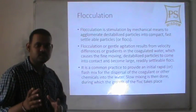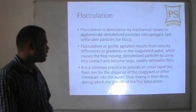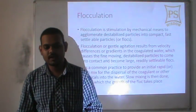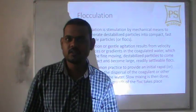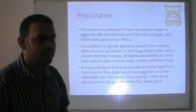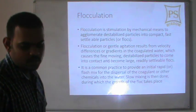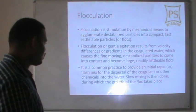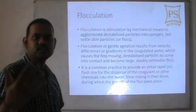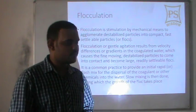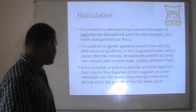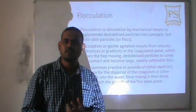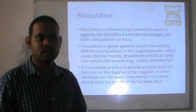Gentle agitation results from velocity differences or gradients in coagulated water, which causes the fine moving particles to come into contact and become large, readily settlable flocks. It is common practice to provide initial rapid or flash mixing, in which coagulants are mixed with water rapidly for dispersal into water. After this rapid mixing, slow mixing is done, during which the growth of flocks takes place.